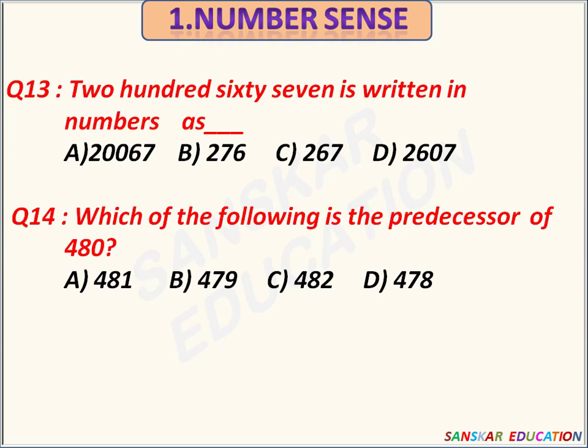267 is written in — options are given. The correct option is Option C.